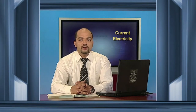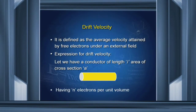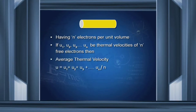Drift velocity is defined as the average velocity attained by free electrons under an external field. Let us study the derivation for drift velocity. Let we have a conductor of length L, area of cross-section A, having n electrons per unit volume. If u1, u2, u3, ... un be the thermal velocity of n free electrons, then average thermal velocity u equals (u1 + u2 + u3 + ... + un) divided by n.